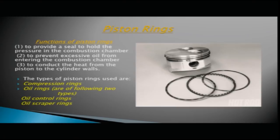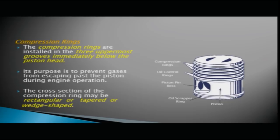The types of piston rings are compression rings and oil rings. Oil rings are of two types: oil control rings and oil scraper rings. The compression rings are installed in the three uppermost grooves immediately below the piston head to prevent gases from escaping past the piston. The cross section of the compression ring may be rectangular, tapered, or wedge-shaped.